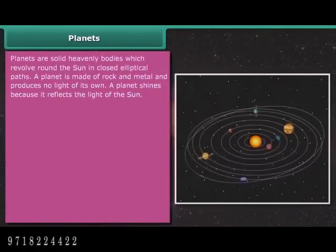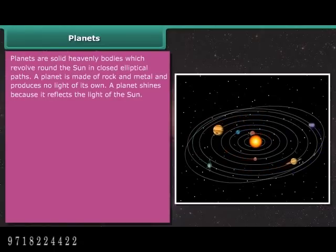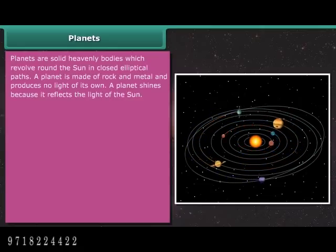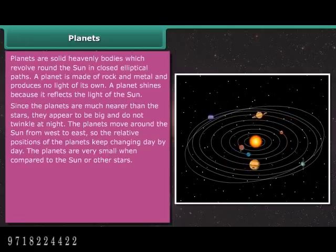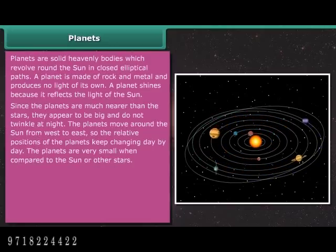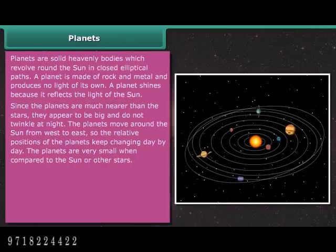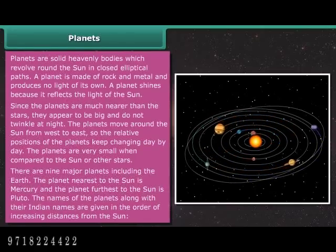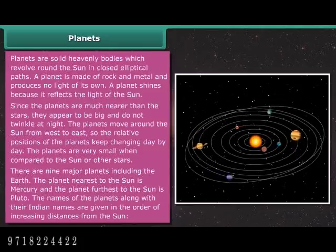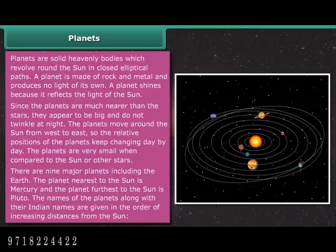Planets are solid heavenly bodies which revolve around the Sun in closed elliptical paths. A planet is made of rock and metal and produces no light of its own — it shines because it reflects the light of the Sun. Since planets are much nearer than the stars, they appear bigger and do not twinkle at night. The planet nearest to the Sun is Mercury and the farthest is Pluto.